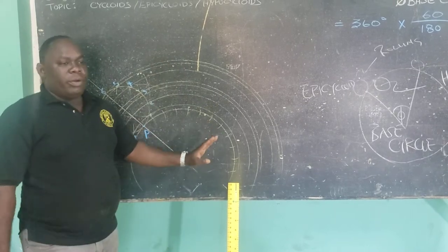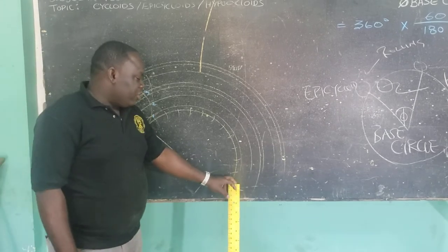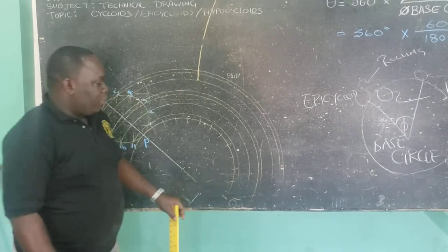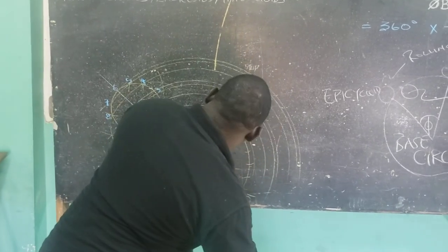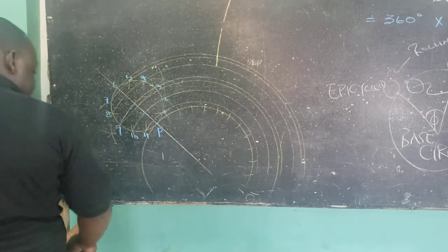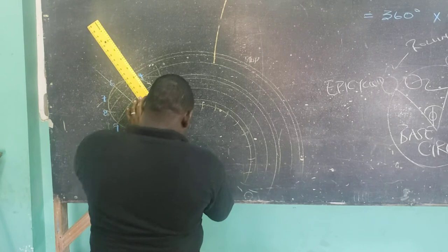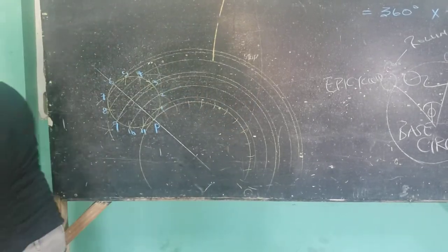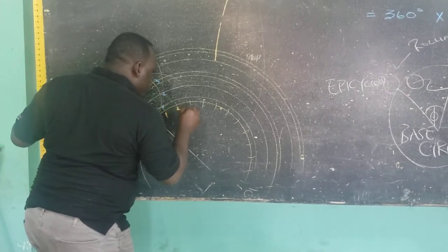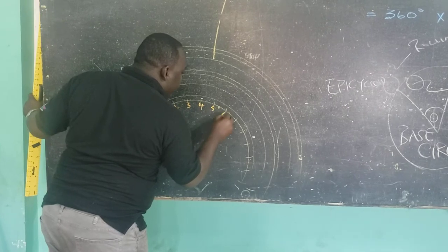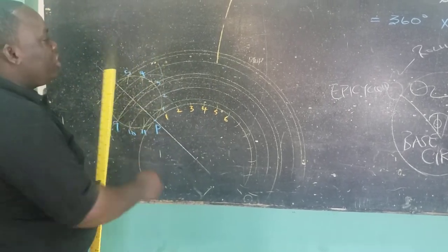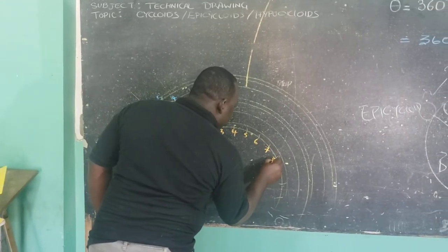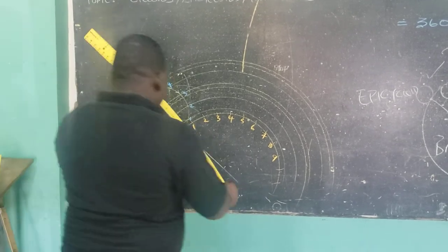For you to understand the principle, we're going to do the first six divisions, because as you realize the drawing would run off the board. We're going to focus on the first six. I'm going to use a different color chalk and run vertical lines through the divisions, labeling them 1, 2, 3, 4, 5, 6. We'll use six because that shows us a peak, and then the process repeats for the remaining divisions.